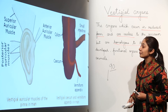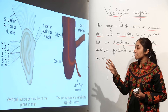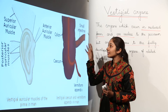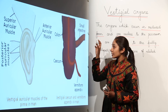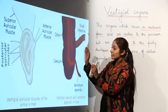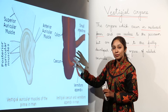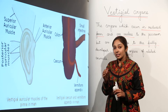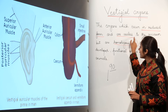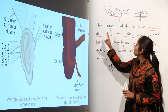In the human body, we have certain auricular muscles. In animals like dogs and cats, these auricular muscles help the animal respond to sound — the pinna of the ear adjusts in the direction from where the sound is coming, helping animals locate the source of sound. But in human beings, these auricular muscles are reduced and have become useless, making them an example of a vestigial organ.